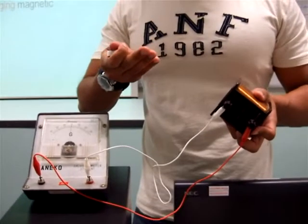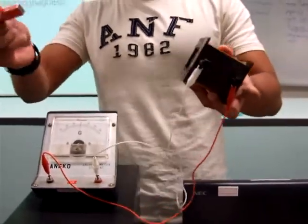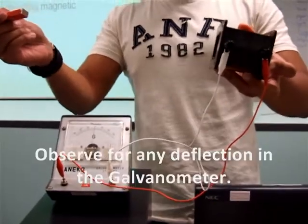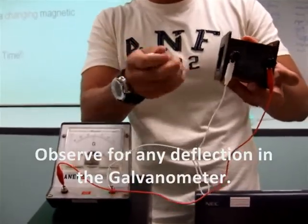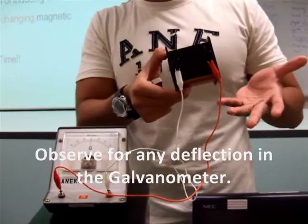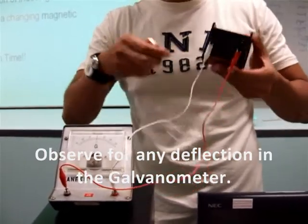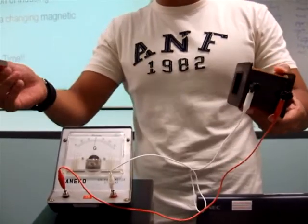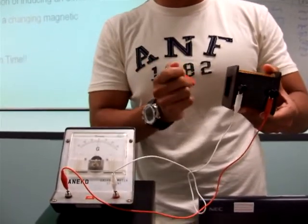Some misconception students will have is because textbooks always illustrate that the magnet moves, but what about the solenoid moving? So this is one of the misconceptions that we have to highlight because most of the books illustrate using the magnet approaching the solenoid.